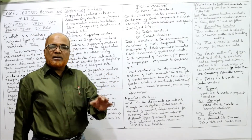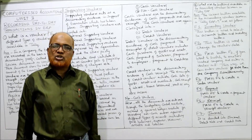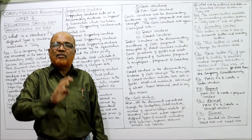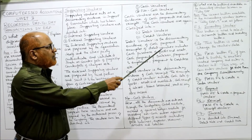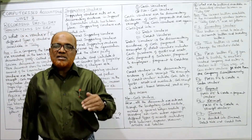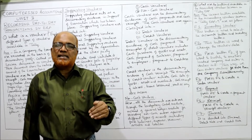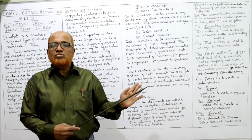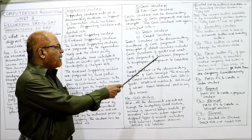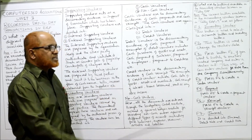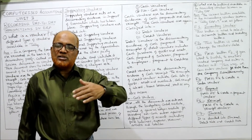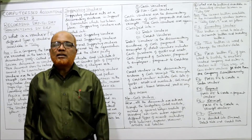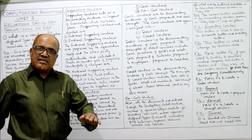Debit cash vouchers are prepared for the payment of cash. Whenever cash is paid, it is supported by a debit voucher. Examples include cash purchase of goods and assets, payment of salaries, payment to employees, payment to creditors, and payment of bank loans — any outgoing cash payment requires a debit voucher.